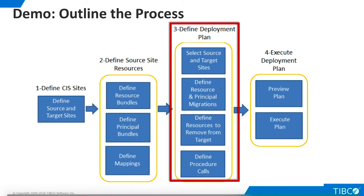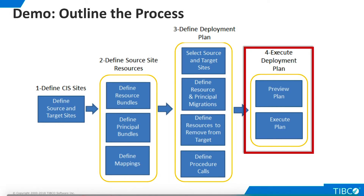In Step 3, we will define the actual deployment plan. To do this, we select our source and target sites and then choose the bundles we want to use. There are two other capabilities in this step, but they are beyond the scope of this tutorial. It is possible to define resources that are to be removed from the target prior to the migration, and it is also possible to define custom procedures that are to be executed prior to the migration. Finally, we will preview and execute the deployment plan.